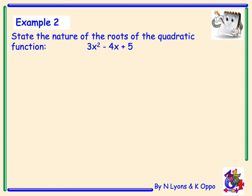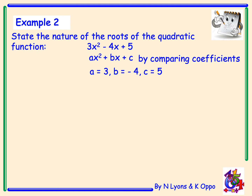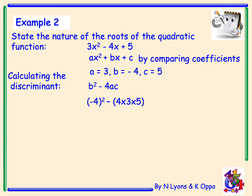Example 2: state the nature of the roots of the quadratic function 3x squared minus 4x plus 5. Write out the general form ax squared plus bx plus c, then compare coefficients: a equals 3, b equals negative 4 — watch your signs — and c equals 5. Now calculate the discriminant, b squared minus 4ac. That gives me minus 4 squared. You need to show it like this in the exam — you must substitute it in correctly to get full marks.